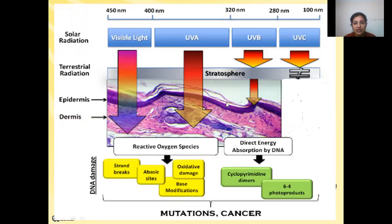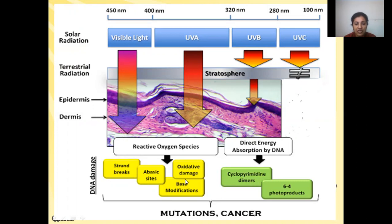This is a figure showing how different ultraviolet rays enter into the skin and what they do. UVC rays are restricted and prevented by the ozone layer existing in the stratosphere. UVB rays enter the epidermis and UVA rays enter the dermis. There they produce reactive oxygen species, or ROS, which causes direct energy absorption by DNA and the breaking of cyclopyrindine dimers, causing oxidative damage and hence mutations and cancer.